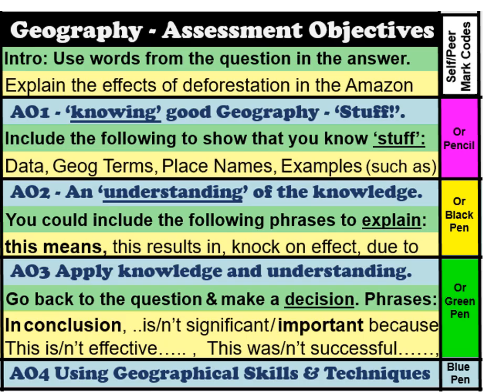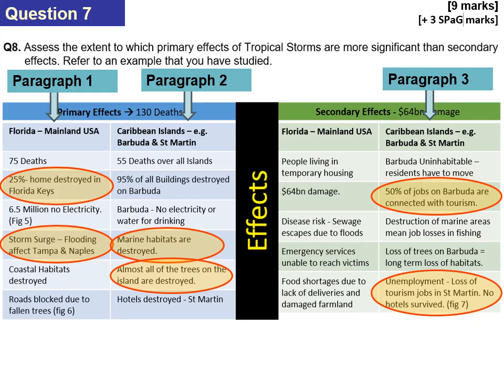AO1 is knowledge — do you know the content? That includes data, geography words, place names, and examples. AO2 is understanding — can you explain it? Use phrases like 'this means that', 'this results in', or 'due to'. AO3 is where most of the marks are — can you make a decision? Use words like 'significant' or 'important', and always use the word from the question itself, which here is 'significant'.